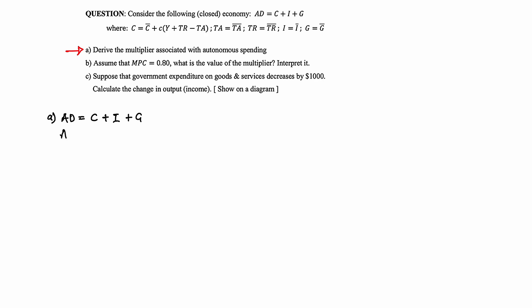So we have aggregate demand equal to: autonomous consumption C-bar, plus small letter C which represents the MPC, multiplied by the bracket of income plus transfer payment minus lump sum tax, then close the bracket. This is the consumption term, plus I-bar which represents autonomous investment, plus G-bar which represents autonomous government spending.